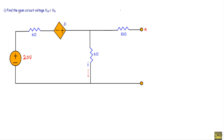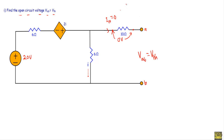At first we will calculate the open circuit voltage Vab, which will be our Thevenin voltage Vth. Since this portion of the circuit is open, the current through the 10 ohm resistor should be equal to zero, because there is no current flow in an open circuit. As the current is zero, the voltage across the 10 ohm resistor will also be equal to zero.